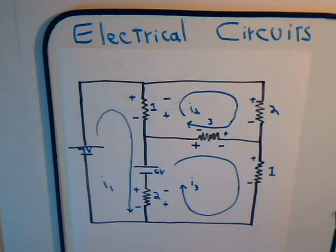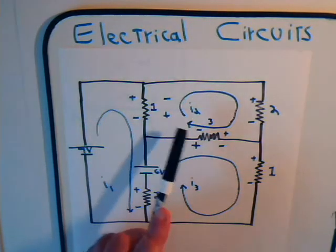This video is part C on our introduction to mesh current analysis. Here is the circuit that we have considered in the past two videos, and in the first video we set up the equations for these three mesh currents.